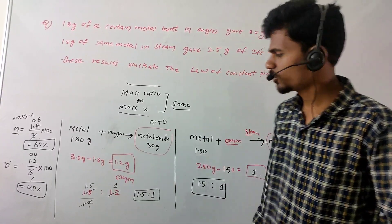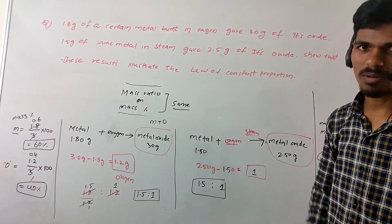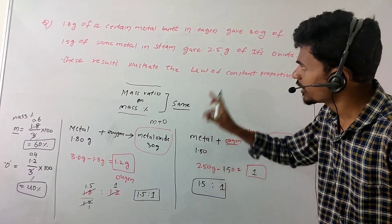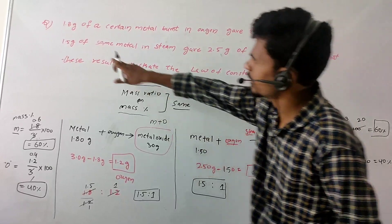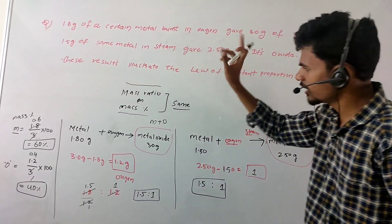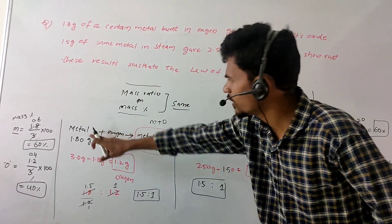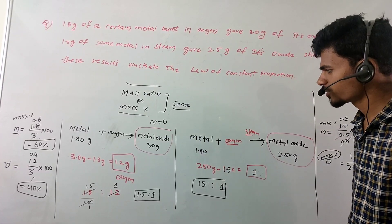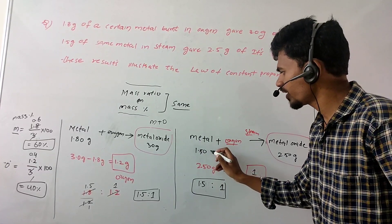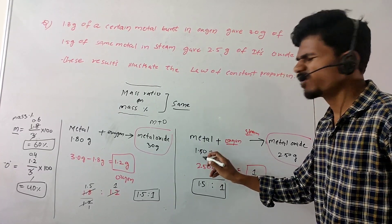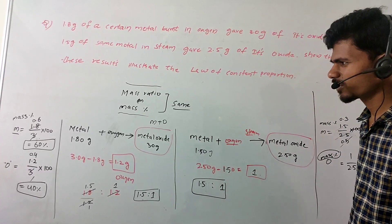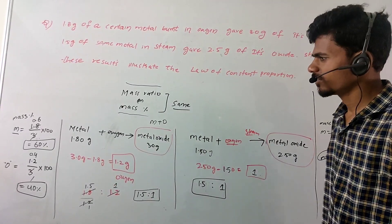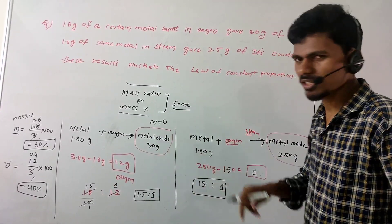For the second metal oxide: 1.5 grams of that metal reacts to give 2.5 grams of oxide. So metal is 1.5 grams. And we confirm: first case, metal 1.8 grams, oxide 3.0 grams; second case, metal 1.5 grams, oxide 2.5 grams.